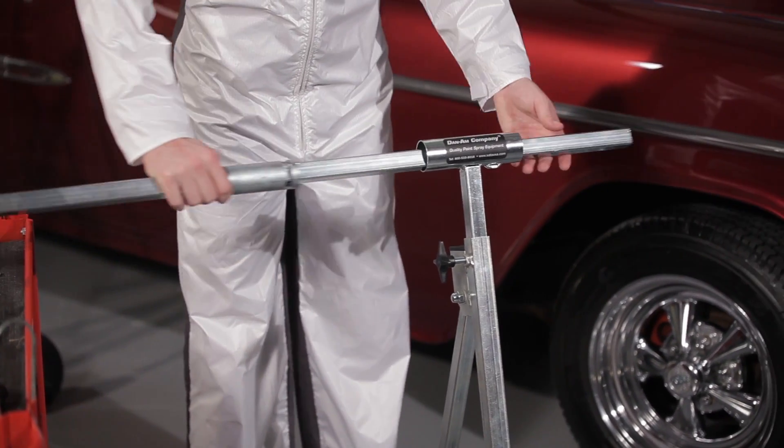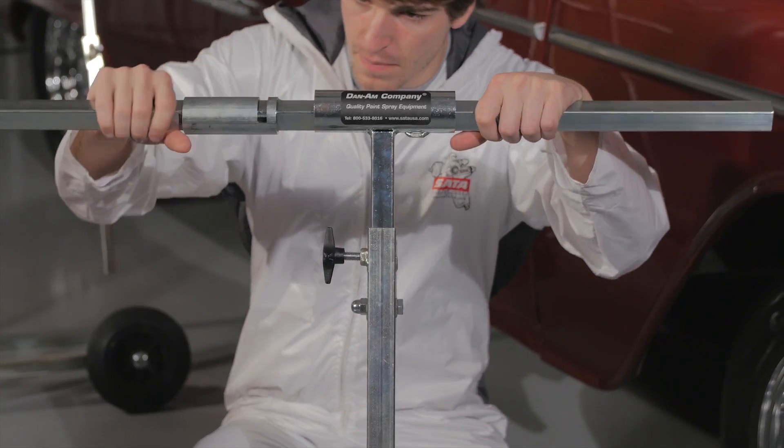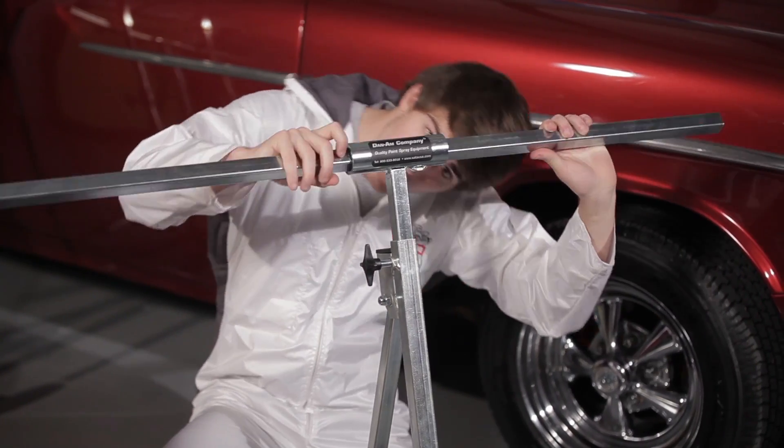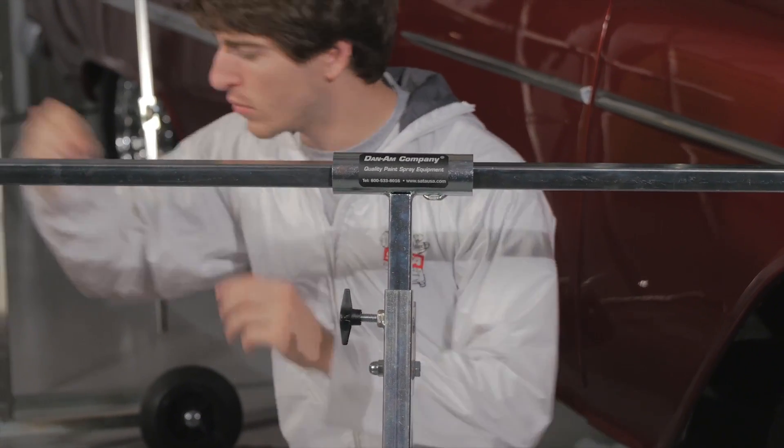Slide the main support bar through the cylinder at the top of the vertical support bar until the central round top on the main support bar fits inside of the cylinder. Make sure the groove cut into the raised round tube lines up with the bolt holes on the bottom of the cylinder.